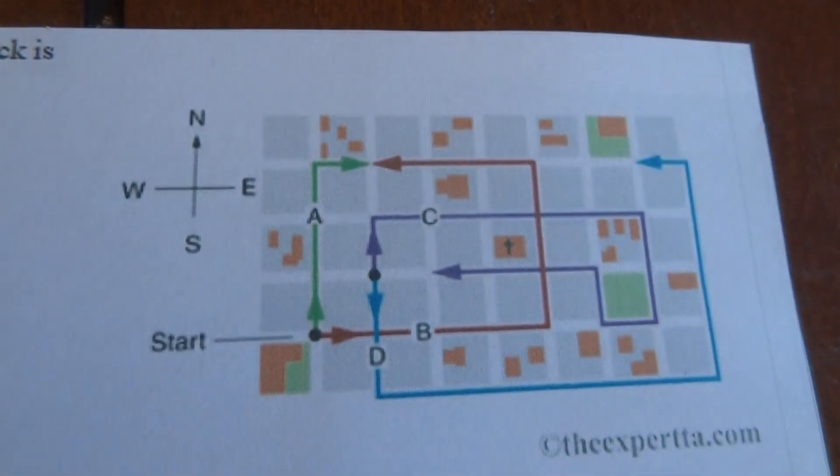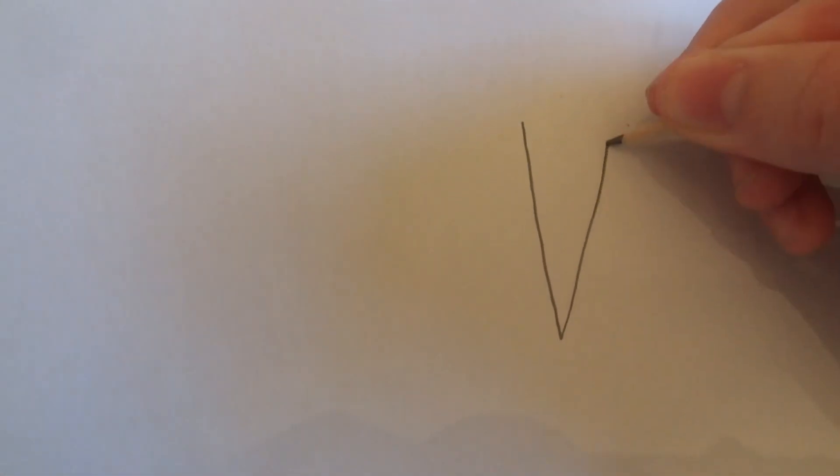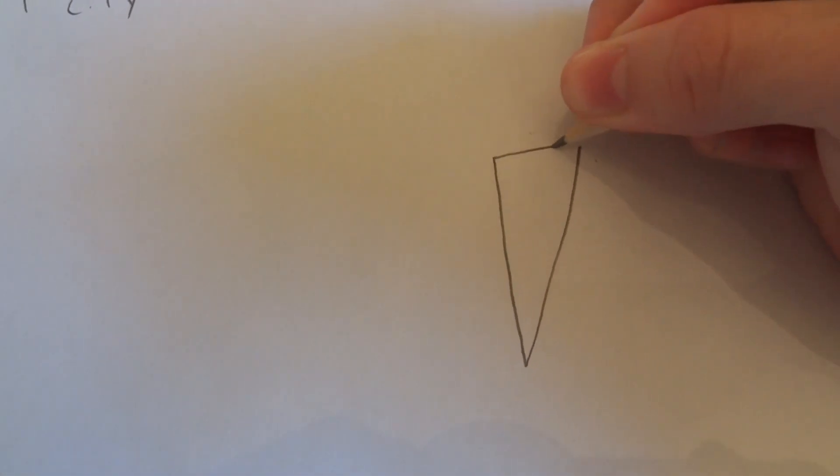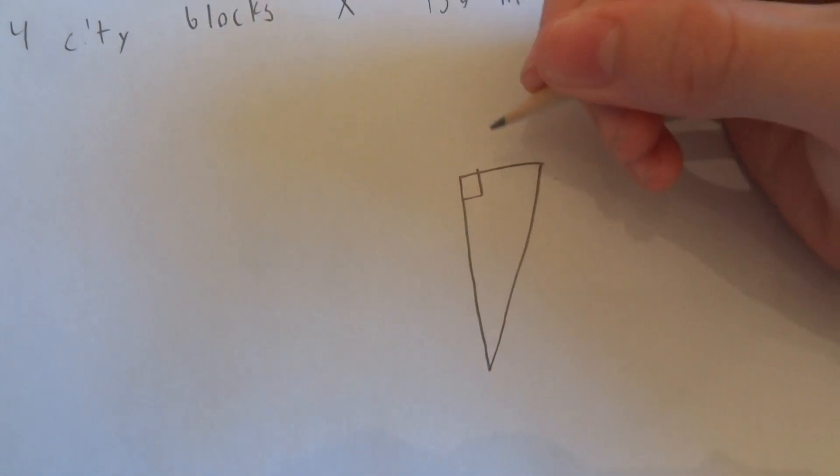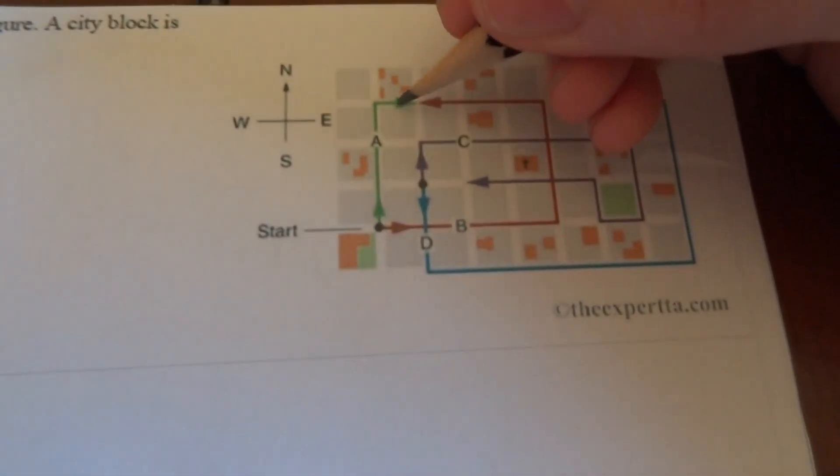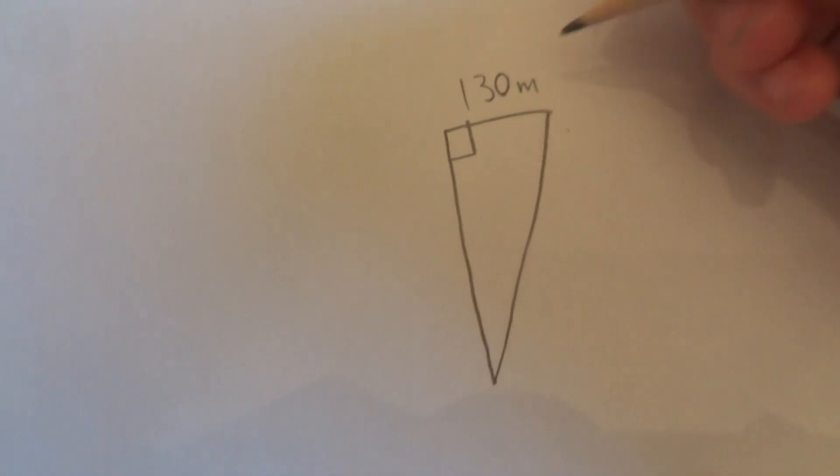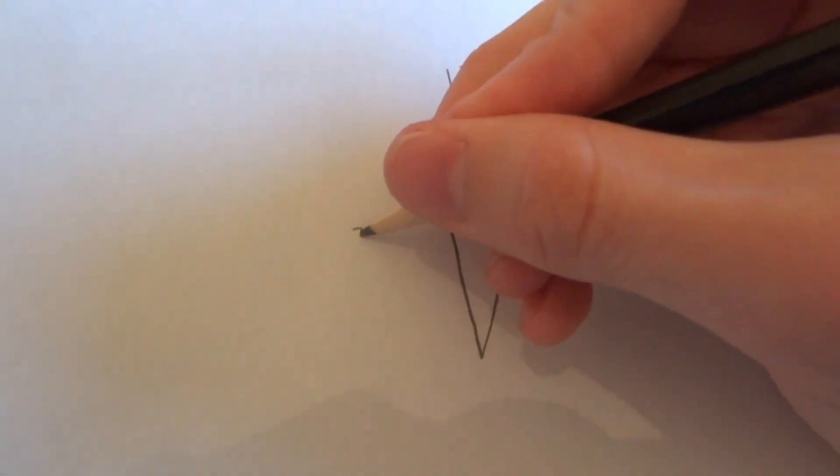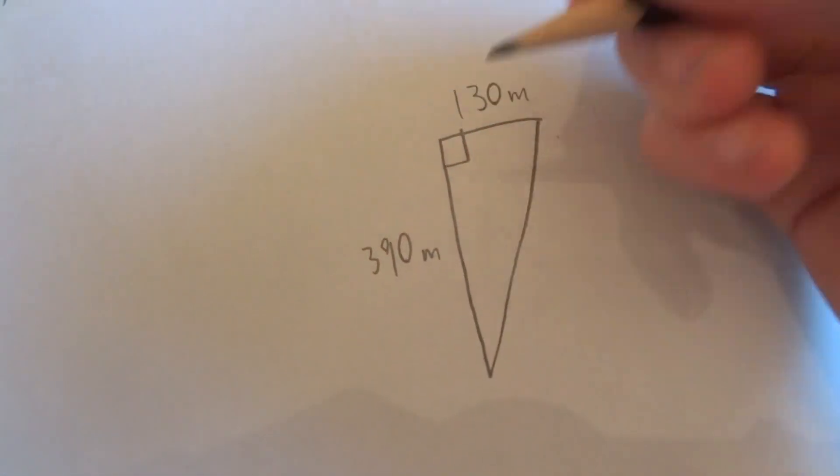And so that is essentially two sides of a right triangle, so you can just draw it out here like this. And we know that this side of the right triangle is 130 meters and the other side is 390 meters.